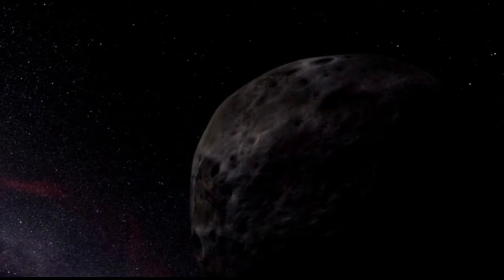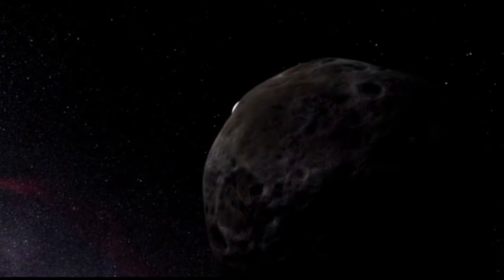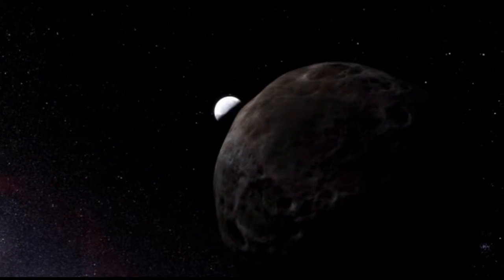Because Eris also has a moon, called Dysnomia, astronomers have also been able to calculate the mass of Eris by a careful study of this moon's orbit.